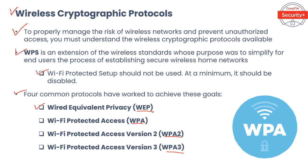WEP's goal was to provide security on par with wired networks, but it has many known security issues and was superseded in 2003 by WPA. WPA, or Wi-Fi Protected Access, was developed in response to security concerns over WEP and implemented using different encryption options. WPA2 further improved on WPA; since 2006 it has been required for Wi-Fi certified devices and introduced AES, or Advanced Encryption Standard, for encryption. WPA3 added more features and strengths to WPA2, maintaining strong cryptographic algorithms while improving the key exchange.